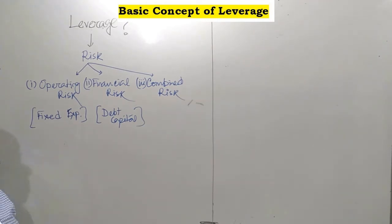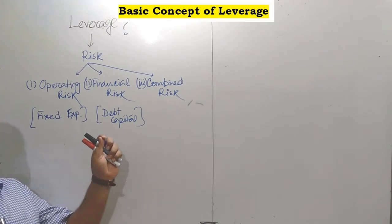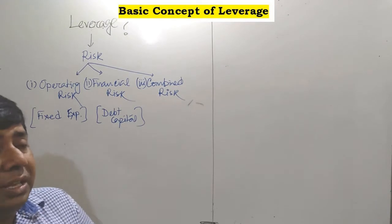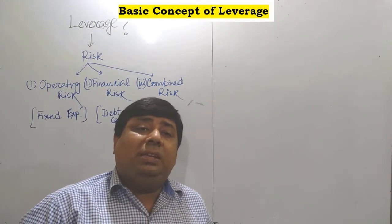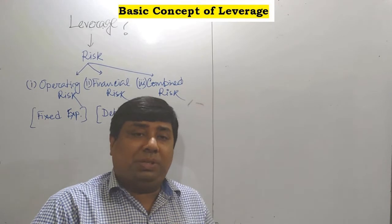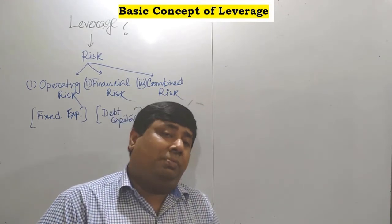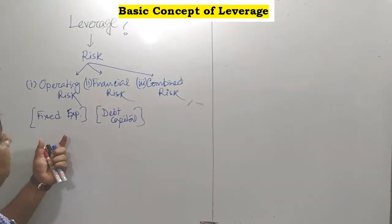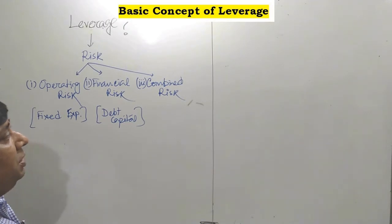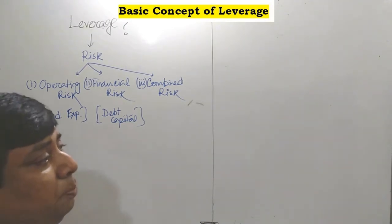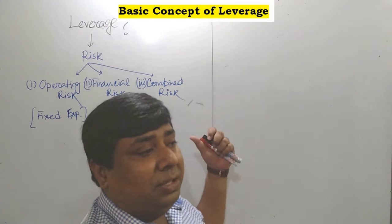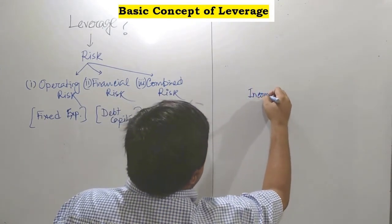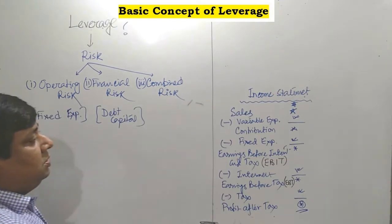To clarify operating risk, financial risk, and combined risk, we just need to know a few parameters. Such parameters are related to the income statement of a business — the profit and loss statement of a business. Before going through the detail, let me give you a brief of the income statement in this regard.